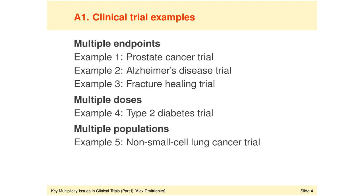In example four, multiplicity is induced by the comparison of multiple doses versus a common control. And finally, example five deals with multiplicity induced by the analysis of multiple patient populations. Even though the settings in examples four and five look different from the setting in example one, the actual underlying multiplicity problems in examples four and five are conceptually very similar to what we see in example one, which is the prostate cancer trial example.